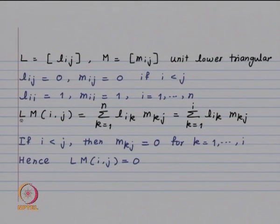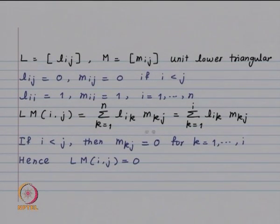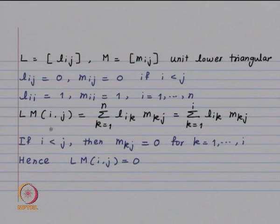The (i,j)-th element of matrix LM, denoted (LM)_ij, is given by summation of L_ik * M_kj for k going from 1 to n — the i-th row of L multiplied by the j-th column of M. Using the fact that L_ij = 0 if i < j, the summation reduces to k going from 1 to i, because when k equals i+1, L_{i,i+1} will be 0. So this becomes summation k = 1 to i of L_ik * M_kj. We are interested in the elements of LM when i < j.